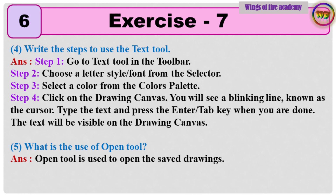4. Write the steps to use the Text tool. Answer. Step 1: Go to Text tool in the toolbar. Step 2: Choose a letter style font from the selector. Step 3: Select a color from the colors palette. Step 4: Click on the drawing canvas. You will see a blinking line, known as the cursor. Type the text and press the Enter or Tab key when you are done. The text will be visible on the drawing canvas.